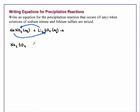The second possible product would be LiNO3 because lithium is plus 1 and nitrate is minus 1.